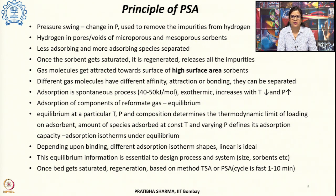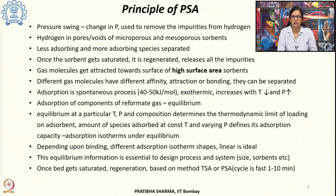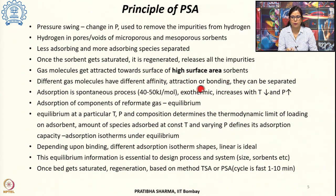When a surface adsorbent is exposed to a mixture of gases, different components of the gas have different affinity towards the surface. Some molecules get adsorbed — they get attracted towards the surface, form a binding, and get adsorbed onto it. The process involves surface adsorption, which is why the adsorbents required should usually have a high surface area. Since different molecules show different affinities, they get separated.